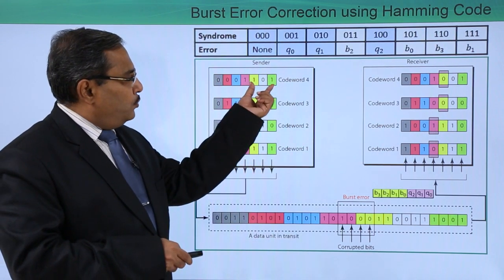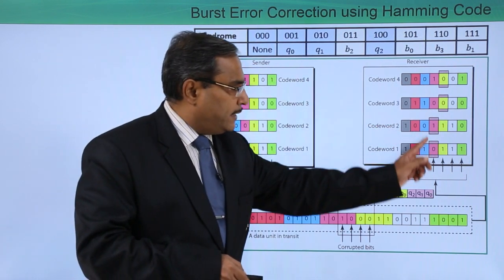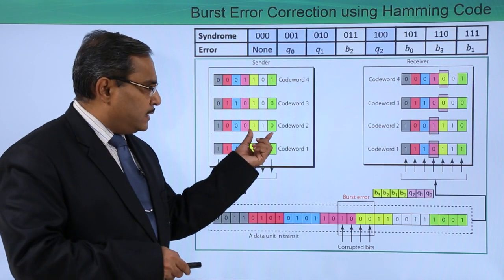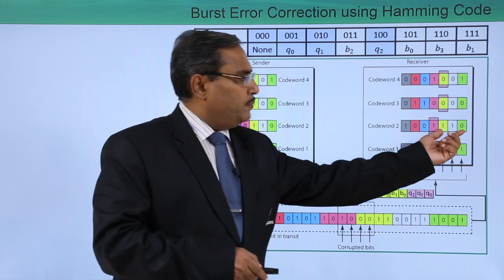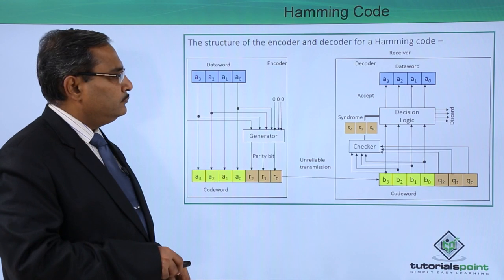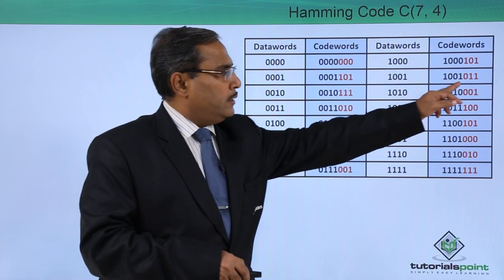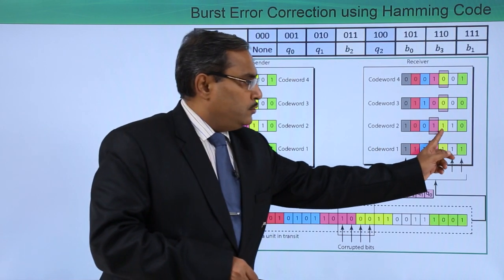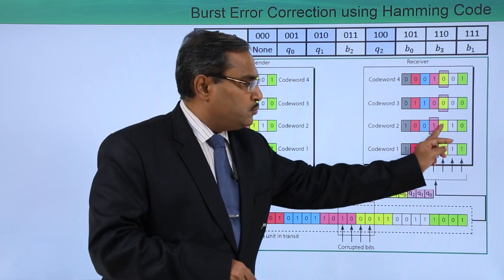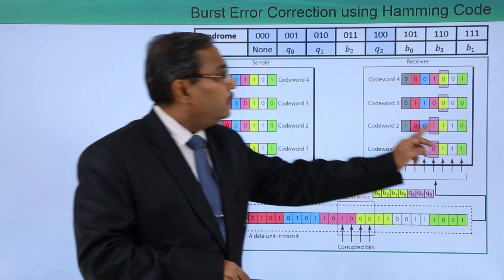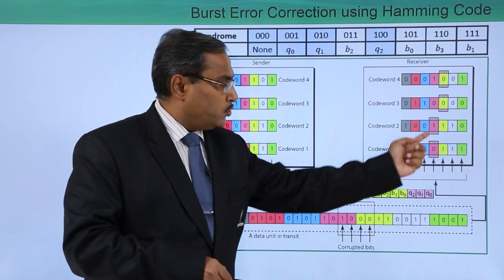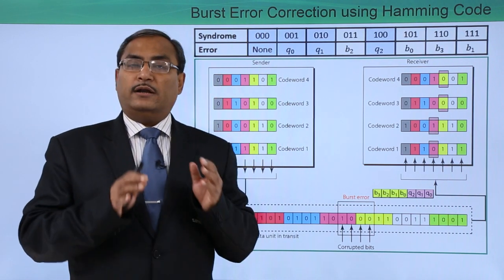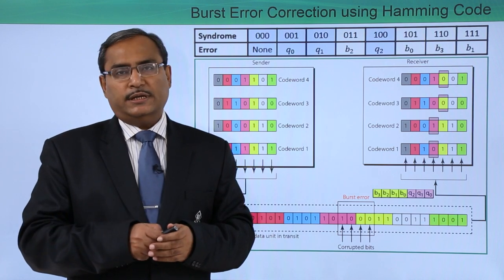Consider only the data bits — when parity bits get corrupted that is handled separately. Here one data bit has got corrupted. The received syndrome is 1, 1, 0, giving parity bits that should be 0, 1, 1. Decoding this: 0 means 0, 1 means 1, 1 means 1 — so the syndrome is 1, 0, 1, which indicates B0 has got corrupted. Indeed, B0 was the corrupted bit. In this way, Hamming code can perform error detection as well as correction for single bit errors. For double bit errors, it can detect but not correct them.